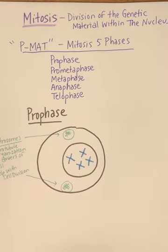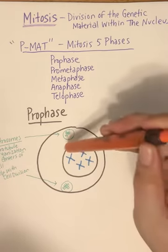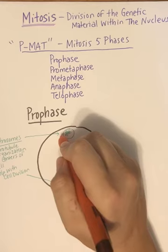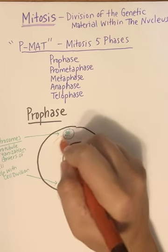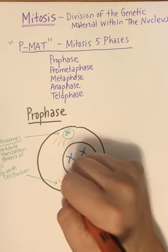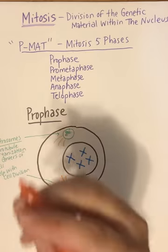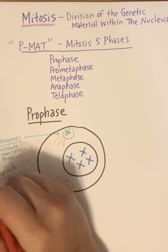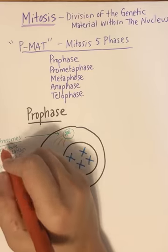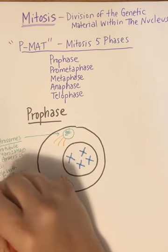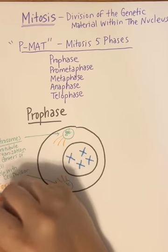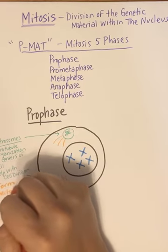Your centrosomes are going to form something known as the mitotic spindle. Remember, it's the microtubule organization center of the cell, so they start to assemble microtubules that come off of the centrosomes. We call this the mitotic spindle, sometimes called the spindle apparatus. The centrosomes help with cell division because they form the mitotic spindle.